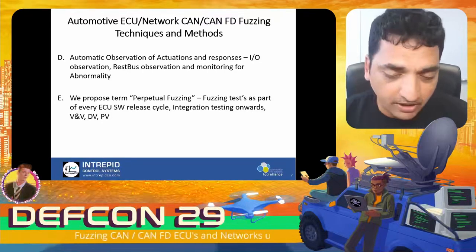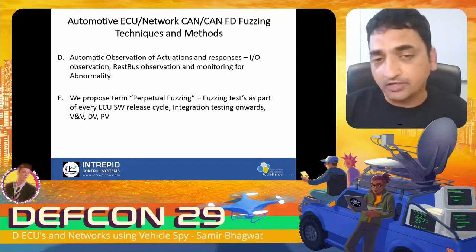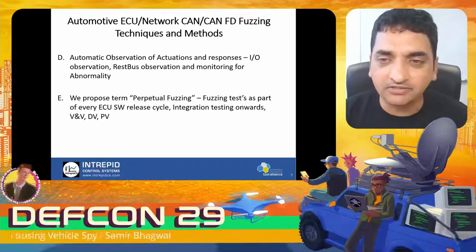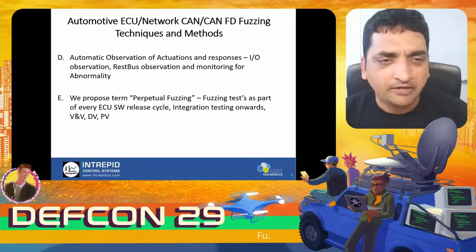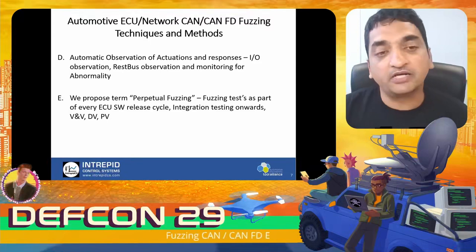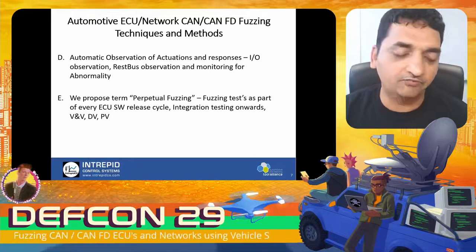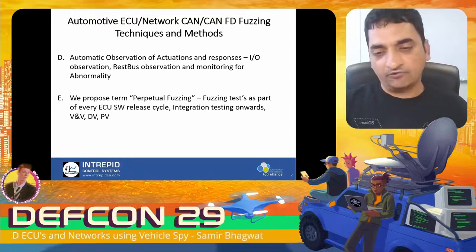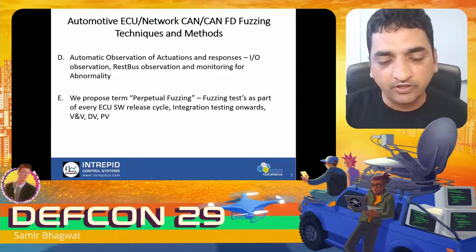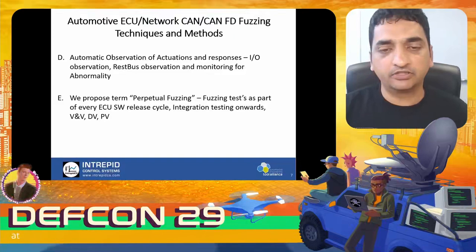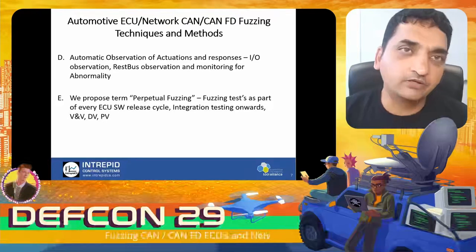Vehicle Spy software has the capability to run the fuzz test execution engine and the measurement engine in parallel. That's a key feature — being able to run your fuzzer execution engine in parallel with your measurement engine gives very good control on tests and is a critical feature for successfully capturing failures.